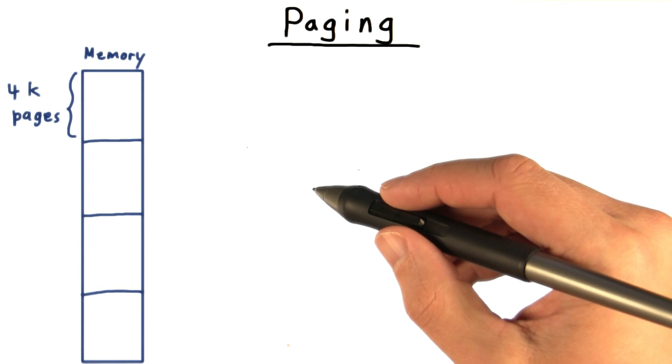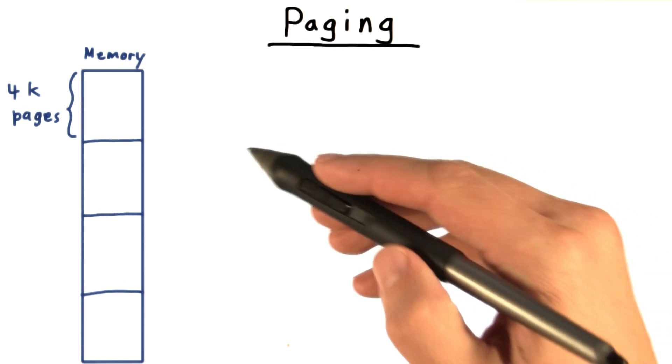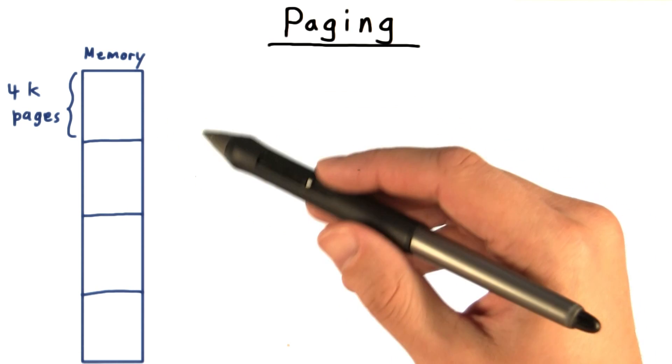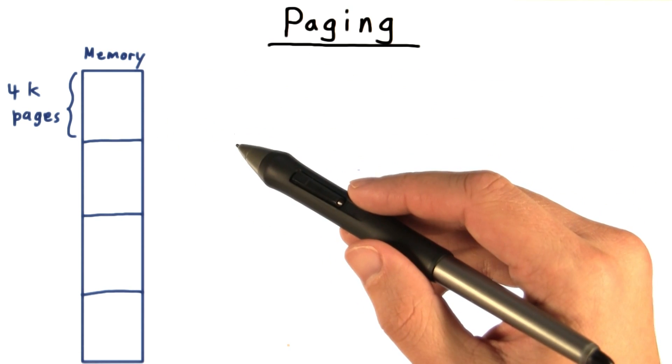Similarly, for a paging system, we divide up our physical address into pages, often 4K long. Pages are the granularity at which we grant memory to processes.